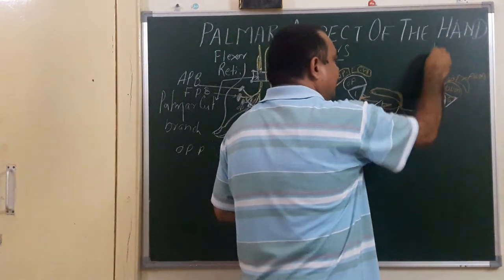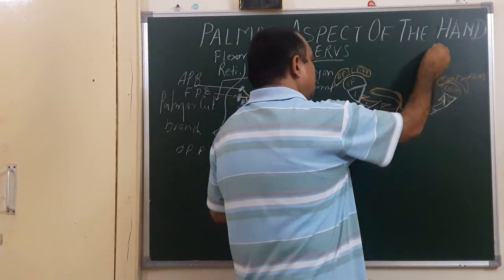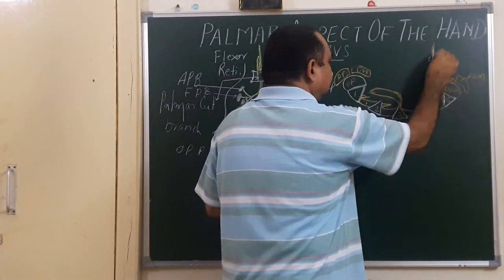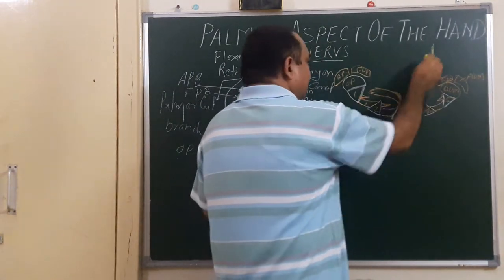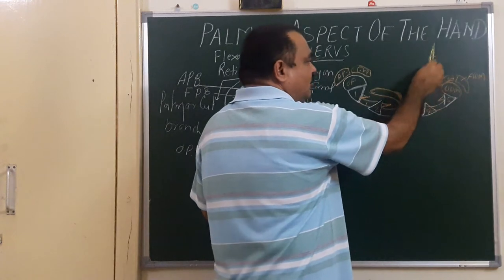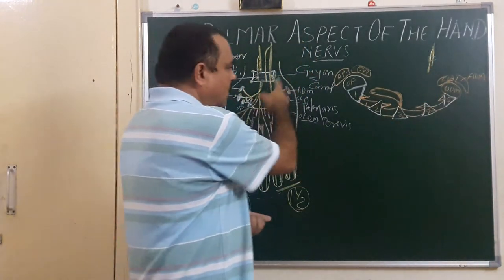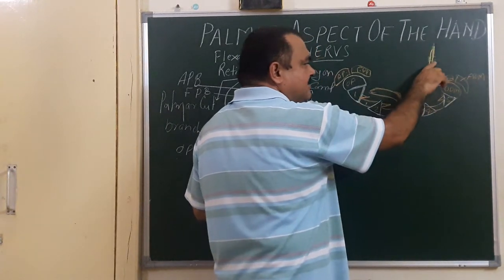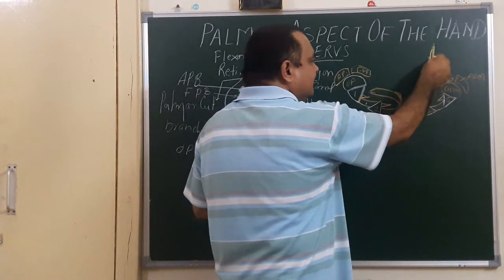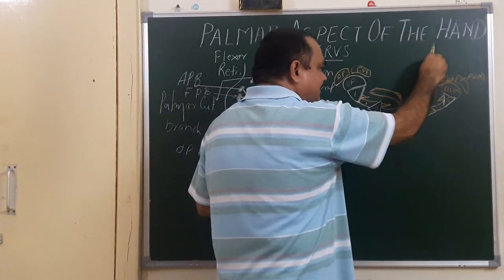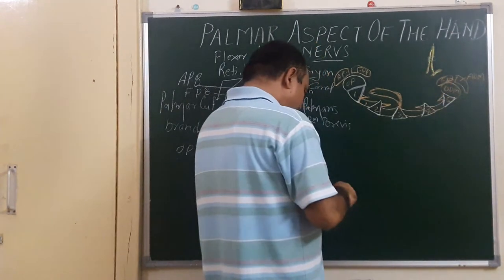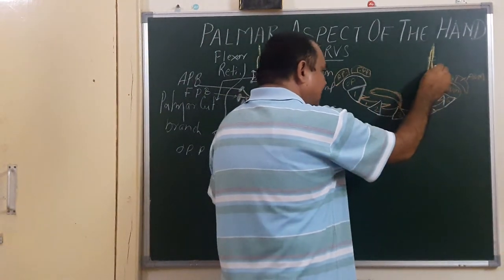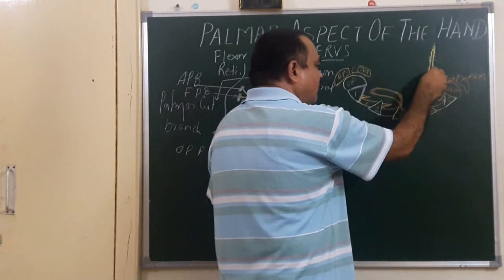Here is the position of the ulnar nerve. It gives a palmar cutaneous branch before the flexor retinaculum, at the level of the flexor retinaculum. It passes superficial to the flexor retinaculum, giving a superficial branch — the palmar cutaneous branch — supplying the medial one-third of the palm. The superficial branch also gives supply to palmaris brevis and gives digital branches to one and a half digits.